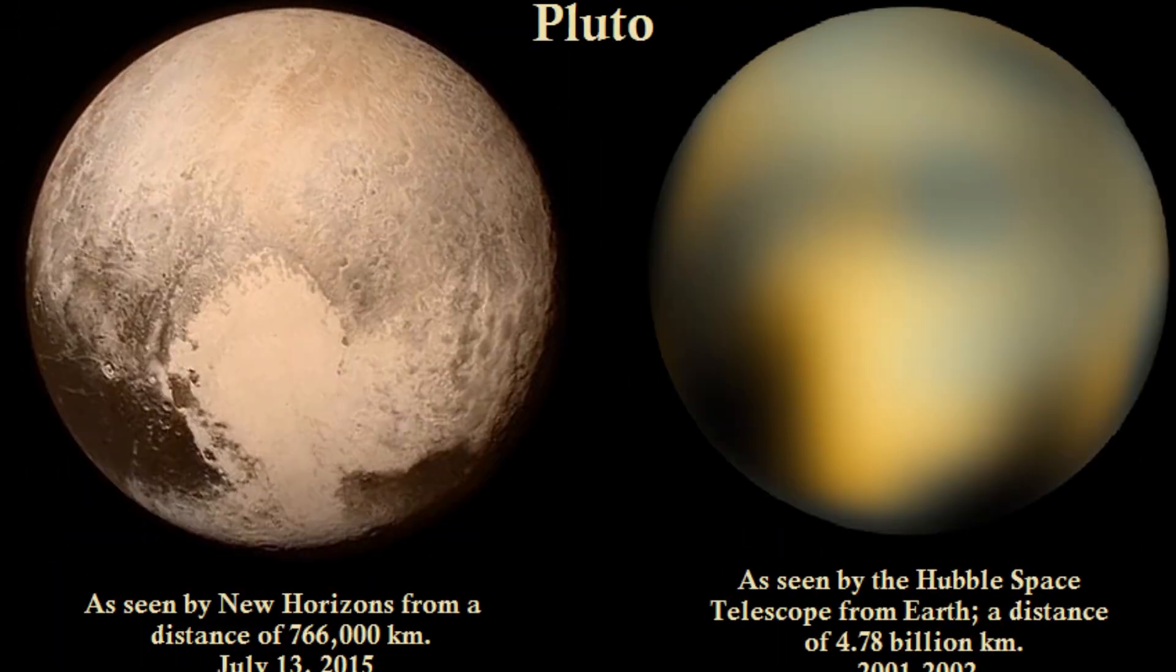For example, the dwarf planet Pluto is a million times dimmer than the planet Saturn, which makes it much more challenging to observe. So something that you can see generally in the night sky, such as Saturn, you can't see Pluto generally in the night sky because it is a million times dimmer. It requires a pretty high-tech telescope to be able to see it.